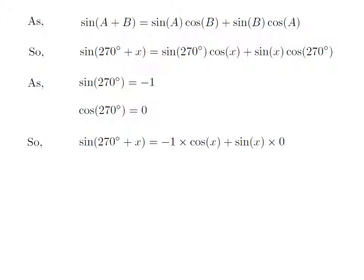Let us replace the value of sine of 270 degree and cosine of 270 degree in the above expression of sine of 270 degree plus x. So we get sine of 270 degree plus x is equal to minus 1 into cosine of x plus sine of x into 0. As minus 1 into cosine of x is equal to minus cosine of x, and sine of x into 0 is equal to 0.